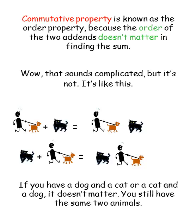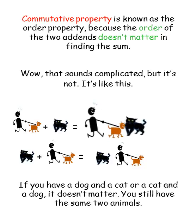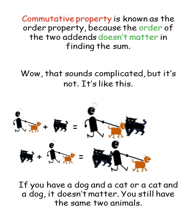Dog plus cat equals dog and cat. Cat plus dog equals cat and dog. If you have a dog and a cat or a cat and a dog, it doesn't matter — you still have the same two animals.